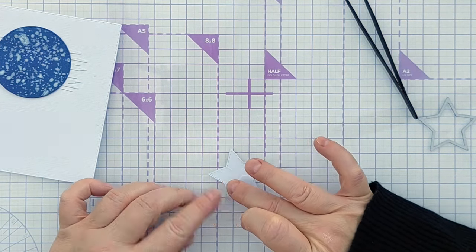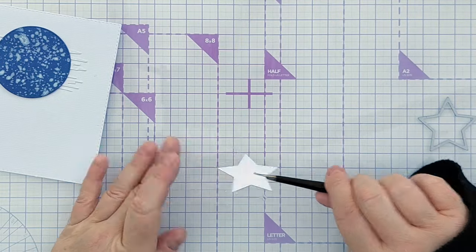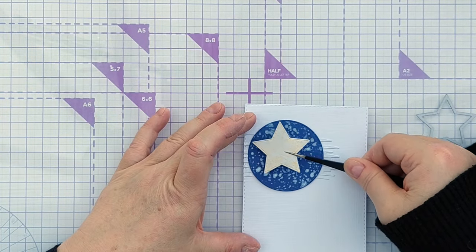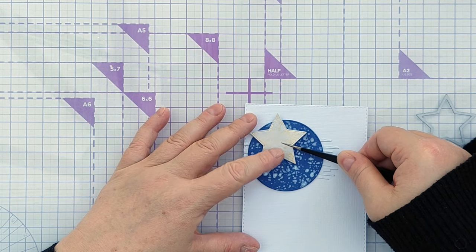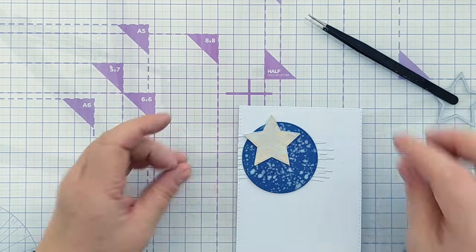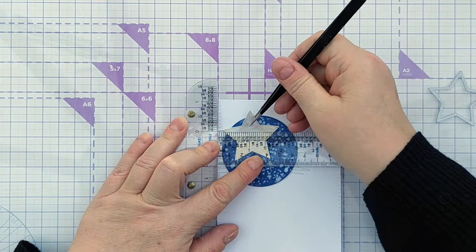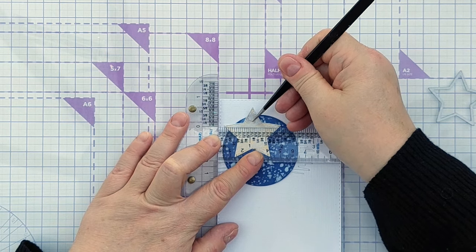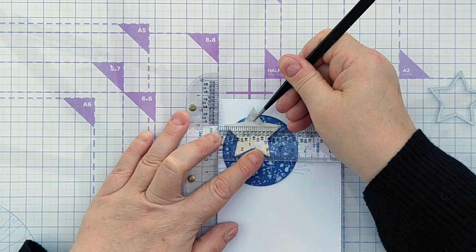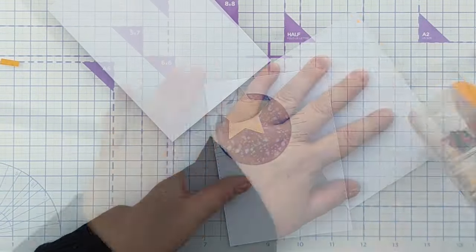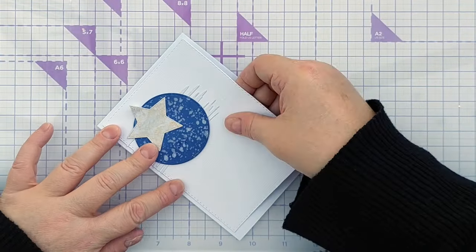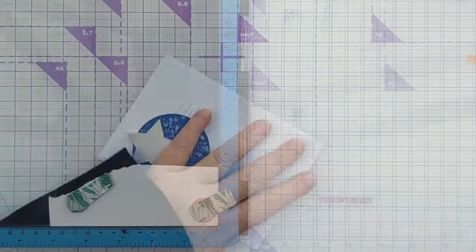To make sure my star was straight on the card I used my t-square ruler to line it up and I did add a little bit of foam tape underneath the top point of the star where it was hanging over the circle just to make sure that didn't get caught and lifted. I then used tape runner to stick my panel to my card blank which I trimmed down with my guillotine.